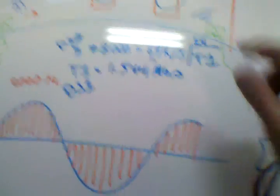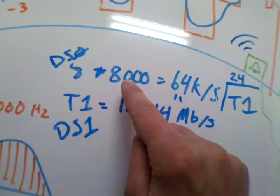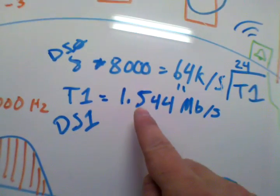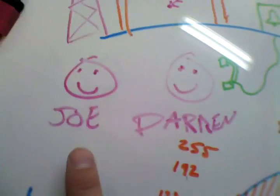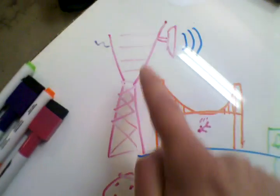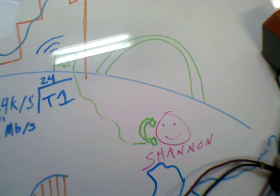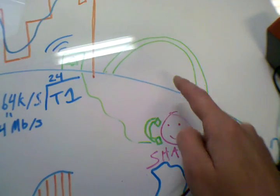Using technology called time division multiplexing, we can take 24 subscriber lines at 64 kilobits per second — you get that because it's 8 bits in a byte times 8,000 hertz — and that goes into a T1, which is 1.544 megabits per second. So subscriber Darren and subscriber Joe can both go to the phone company and either get shot off into space through a satellite, or go over to Sutro Tower here and by microwave make its way to Shannon in Missouri — that's supposed to be the Gateway Arch.